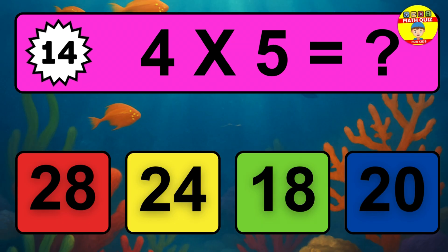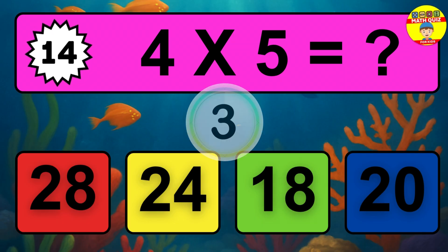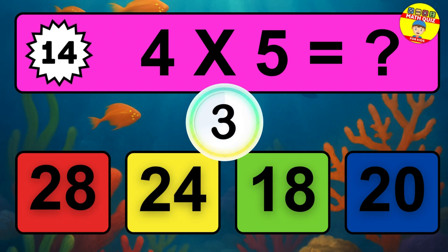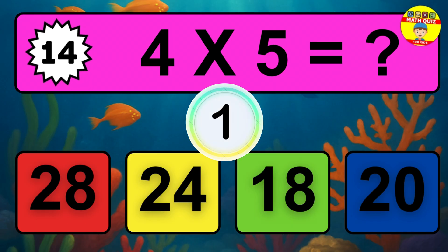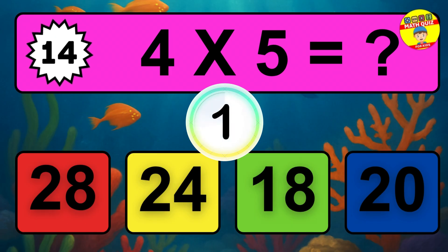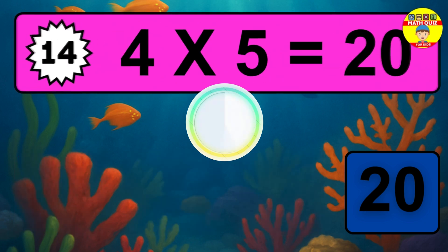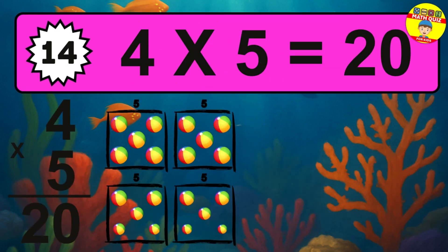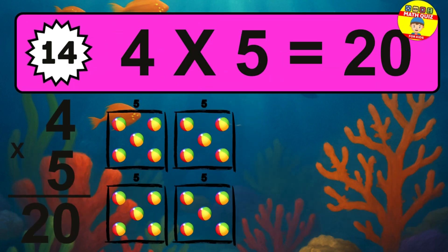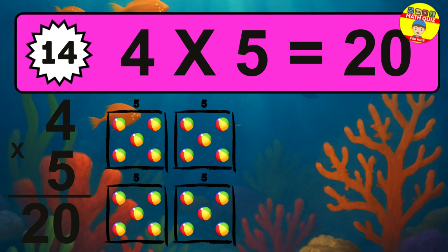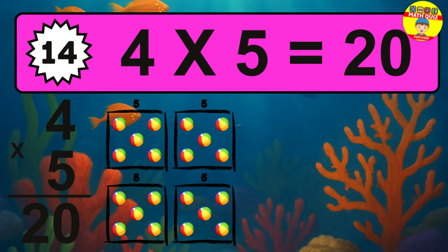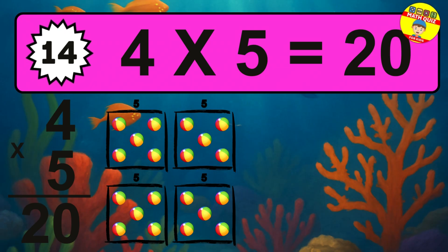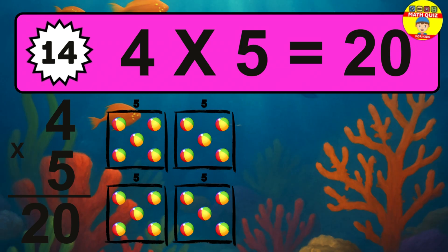Question 14. 4 times 5 equals what? The answer is 4 times 5 is 20. To calculate, we have 4 groups with 5 balls each one. So, how many balls do we have? 20 balls.